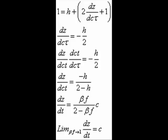The second thing that I do is solve the next equation for dz d tau, and I find that dz d tau is minus h over 2.